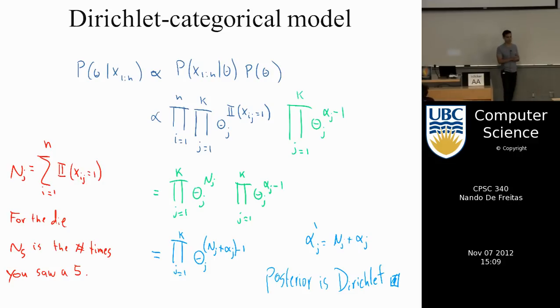The first thing was a generalization of the Bernoulli model, and this is a generalization that allows us to deal with more than just two classes. So we can do K classes.